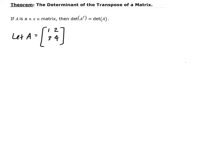So if we take the transpose of that, taking the transpose of this matrix, the columns become rows and the rows become columns. So this is going to be 1, 3, and then 2 and 4.